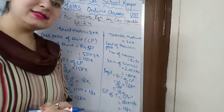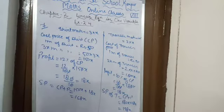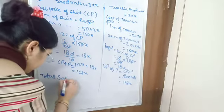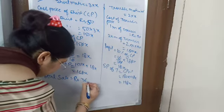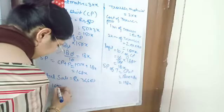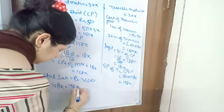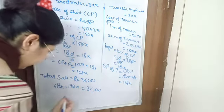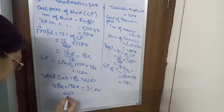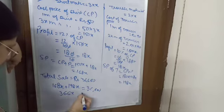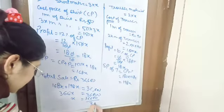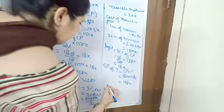They have said total sale is Rs. 36,600. So SP of shirt plus SP of trouser equals 36,600: 168X + 198X = 36,600, which gives 366X = 36,600. Therefore X = 36,600 ÷ 366 = 100.